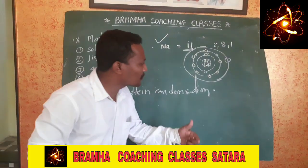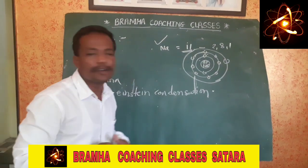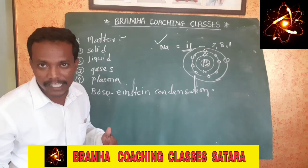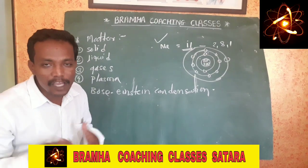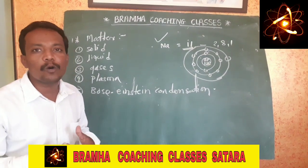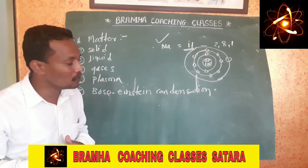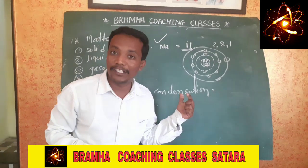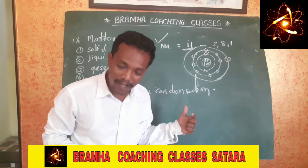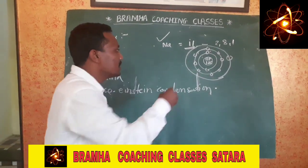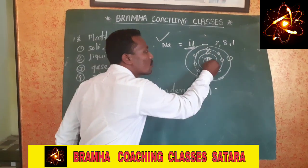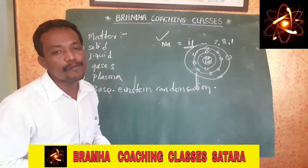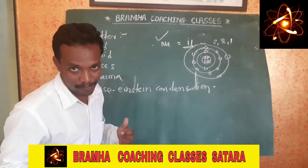Another concept is atomic mass. The simple definition of atomic mass is the sum of the number of protons and neutrons in the nucleus of an atom. For sodium, that is 11 plus 12, so the atomic mass of sodium is 23.